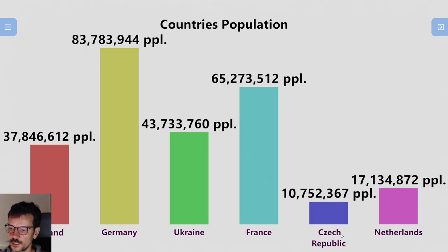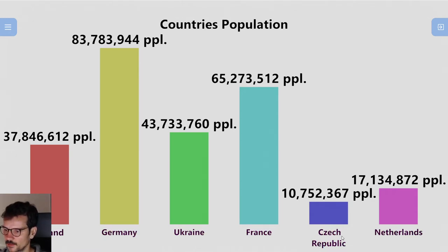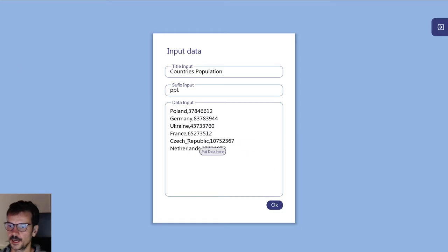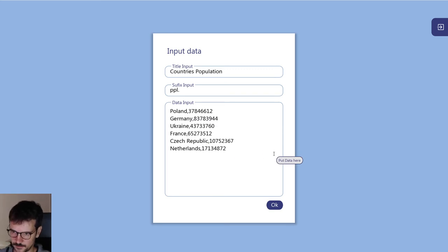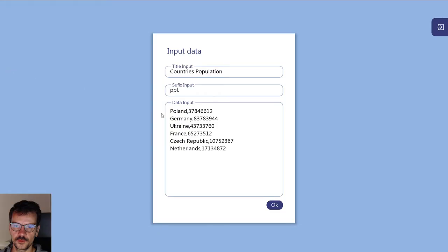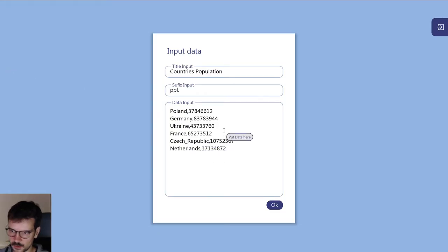Everything works like that. As you can see, Czech Republic is the old name — now it's Czechia. In this case I need a two-word label. If you use just a space, it appears on one line.